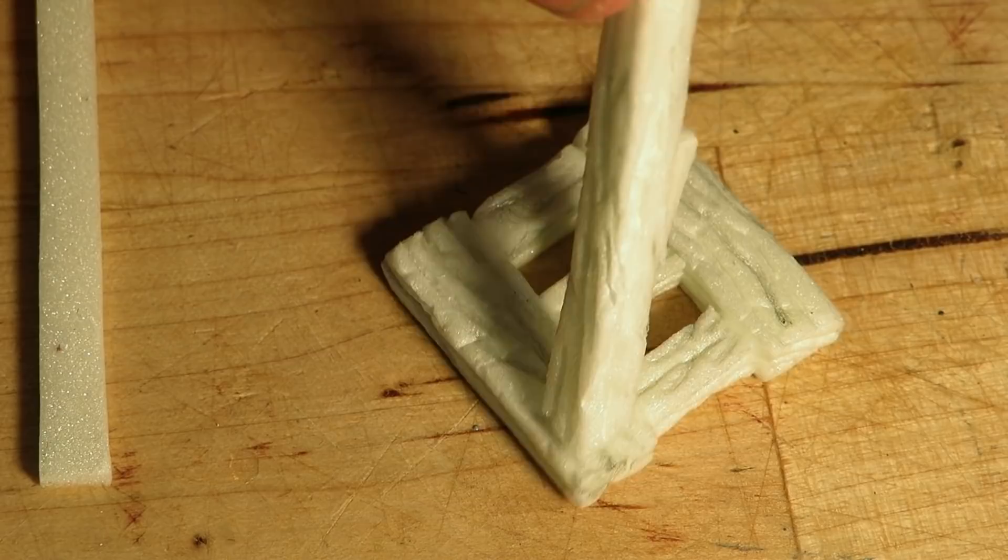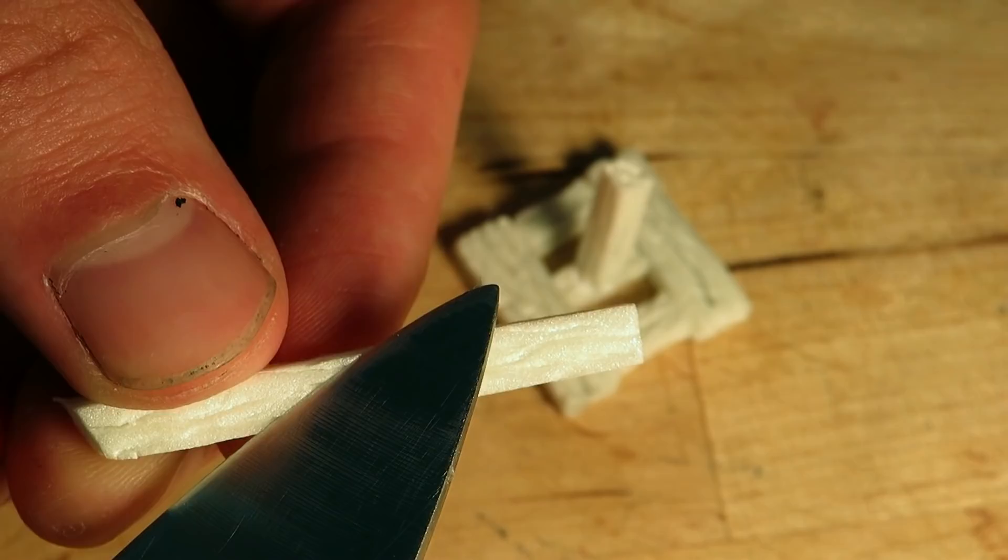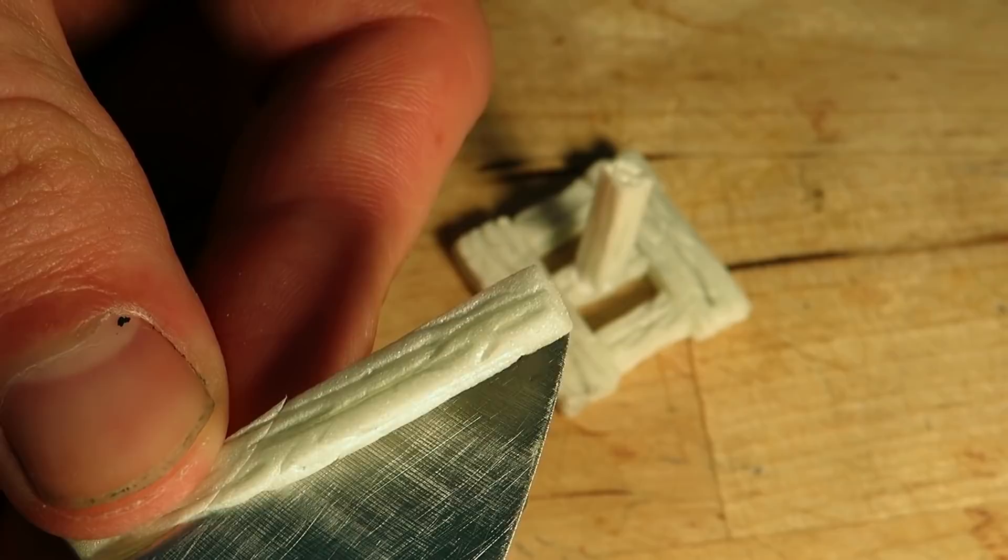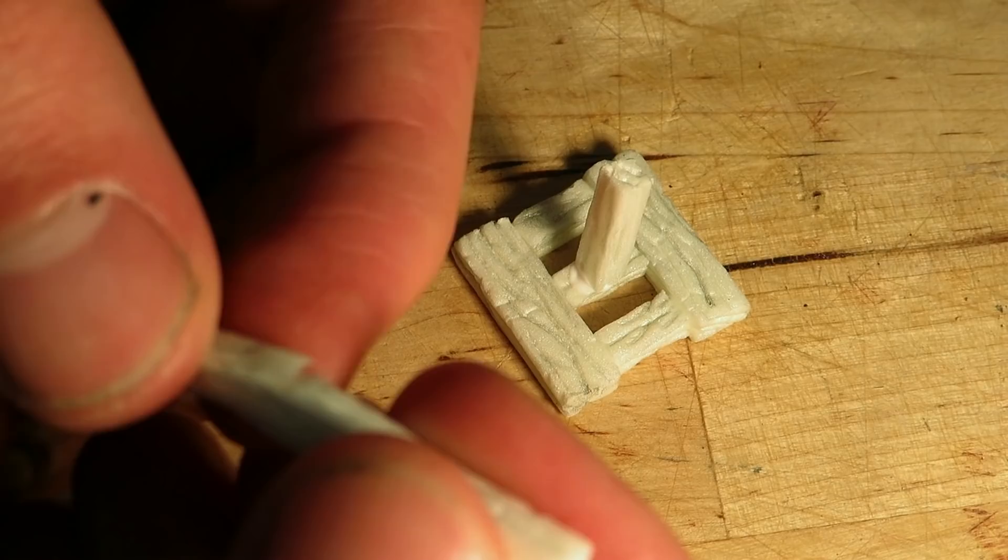Then I made two cuts on the opposite side like this. The idea is that the beam will fit around the one in the middle of the base. Here you can see what I mean. I cut the other pieces in the same way.